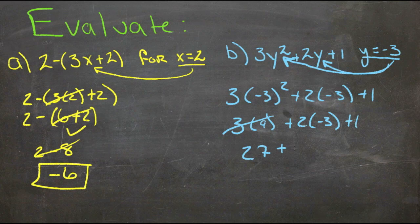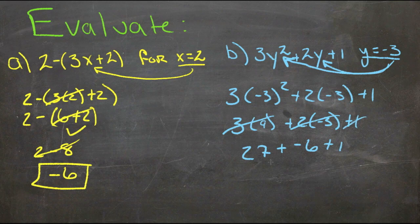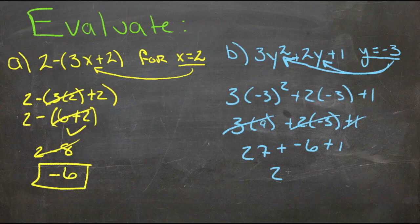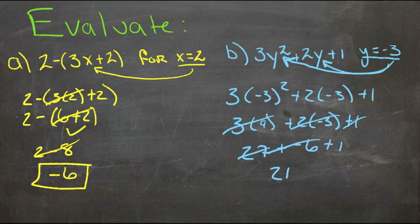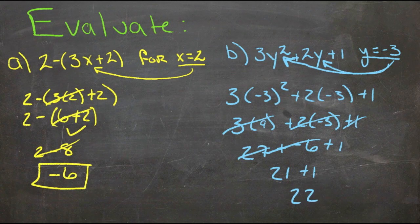Plus 1. And now we have 27 plus negative 6, that's 21. 21 plus 1 is 22.